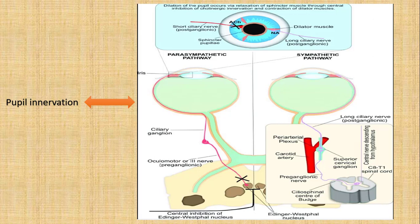The postganglionic nerve is located after the ciliary ganglia and is known as the short ciliary nerve, or postganglionic nerve. This parasympathetic pathway innervates the sphincter pupillae.